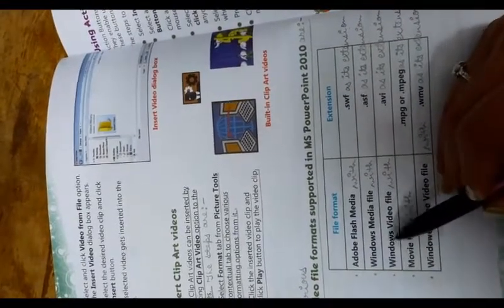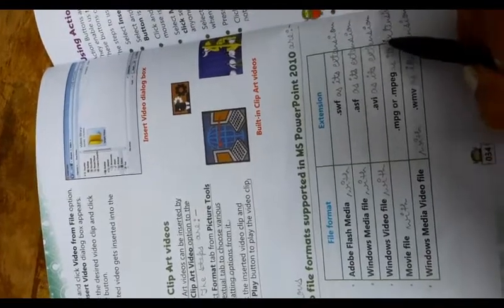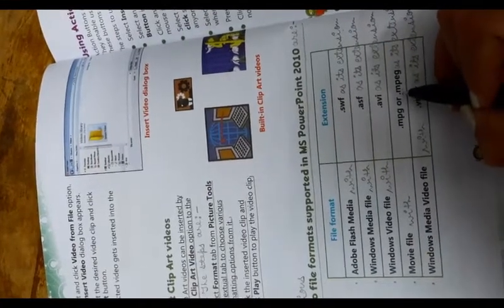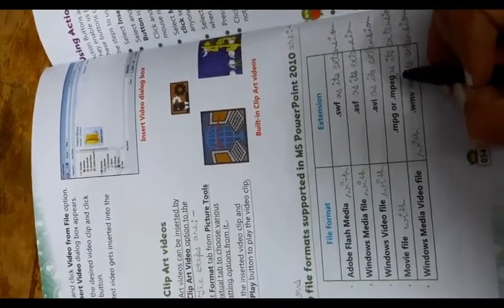Window video file with .avi as its extension. Fifth point, movie file with .mpg or .mpeg as its extension. Fifth point, window media file with .wmv as its extension. This is answer number 3.